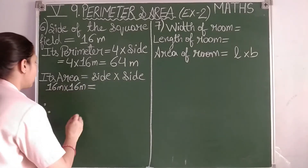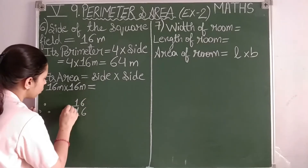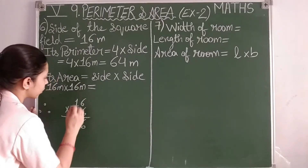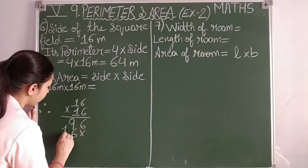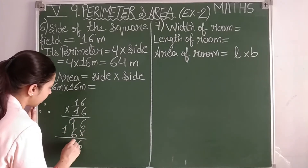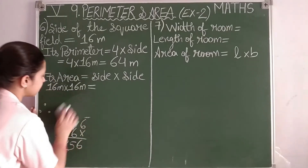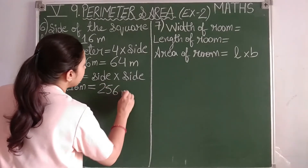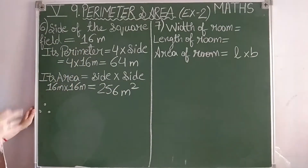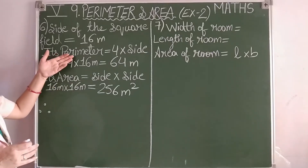Let us multiply 16 into 16: 6 sixes are 36, carry 3; 6 ones are 6, plus 3 is 9; then 1 six is 6, 1 one is 1; adding: 96 plus 160 gives 256. So the area of the square field is 256 square meters.